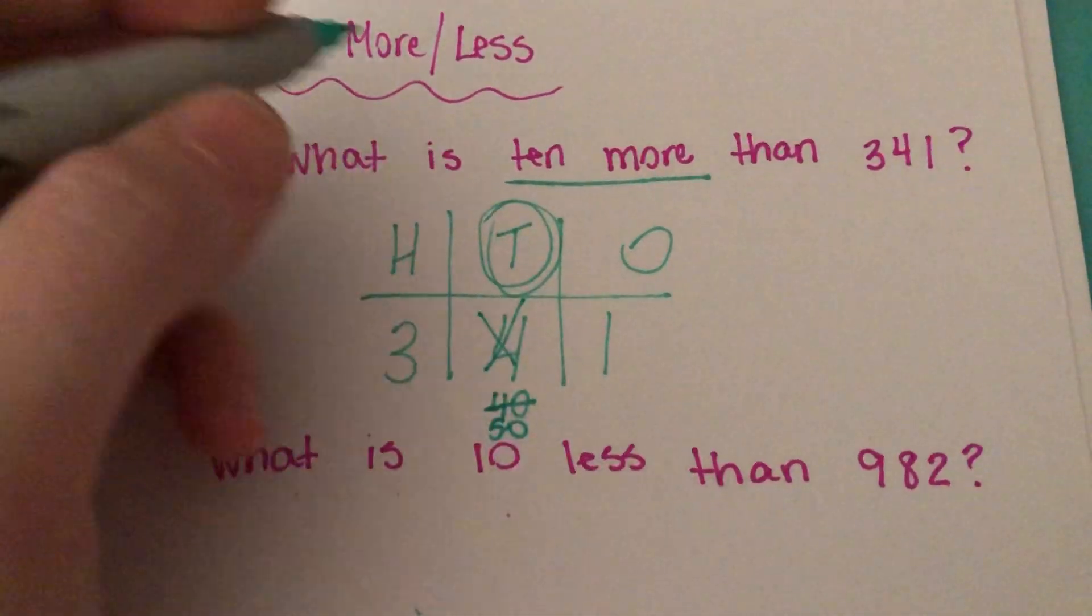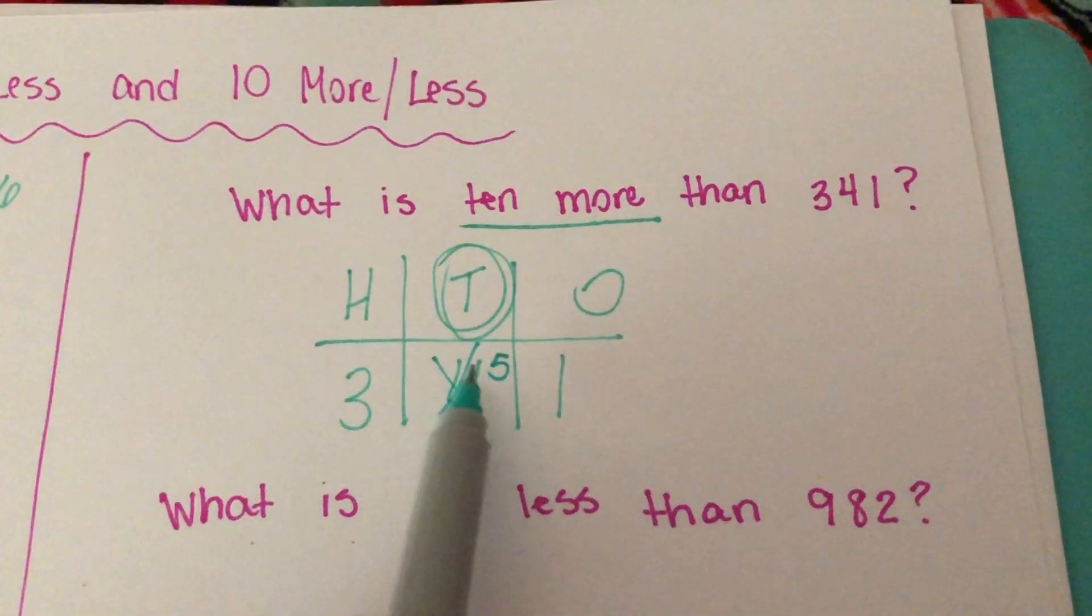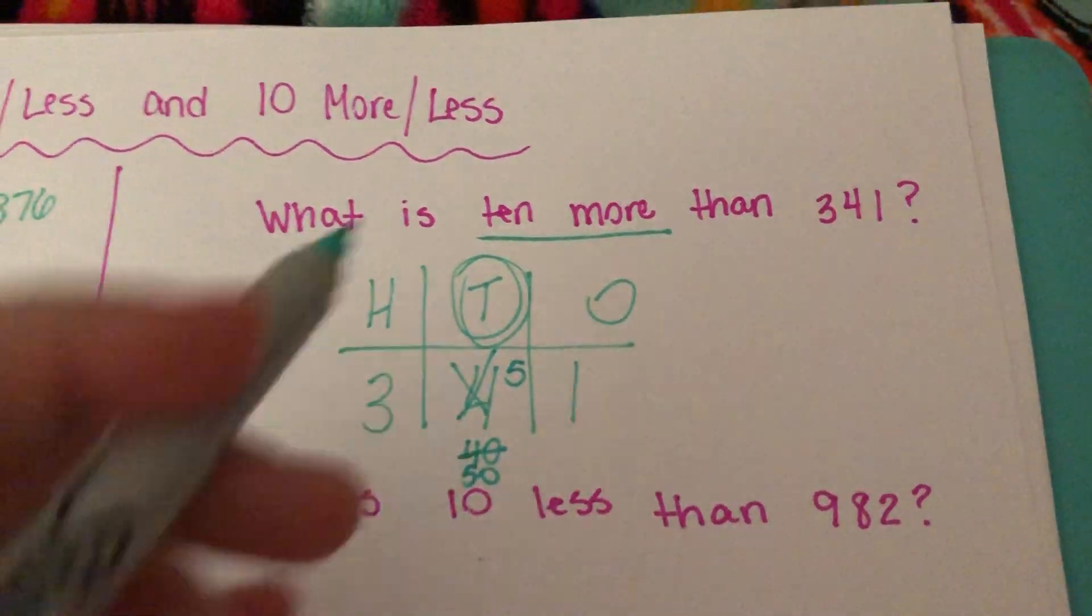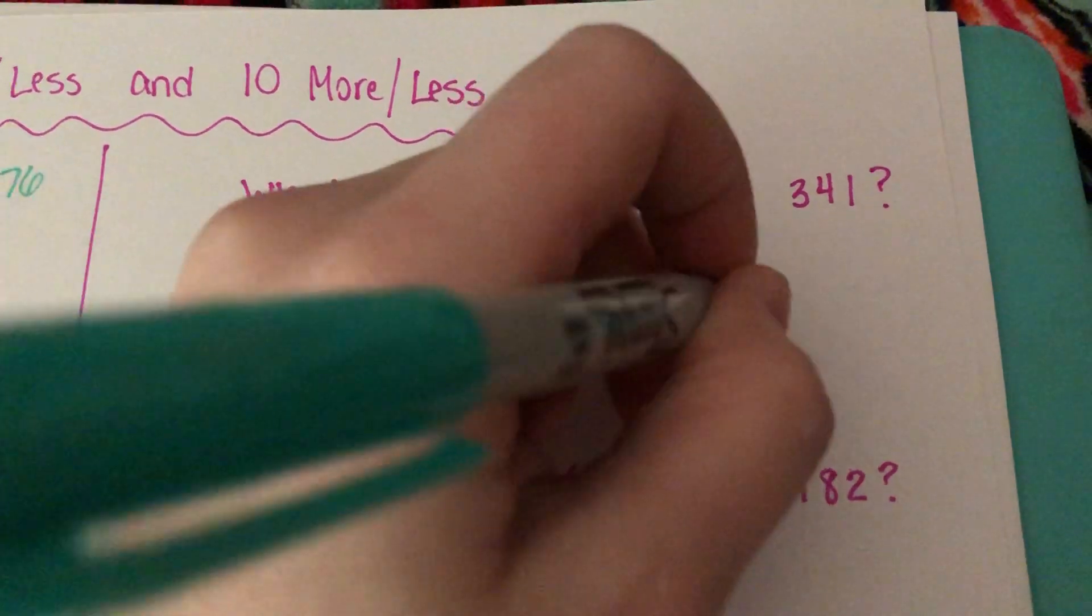And we know that one more than 4 is 5, so instead of four tens, we'll have five tens, making our answer 351.